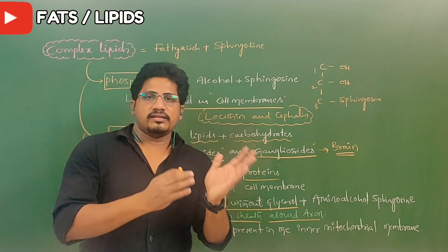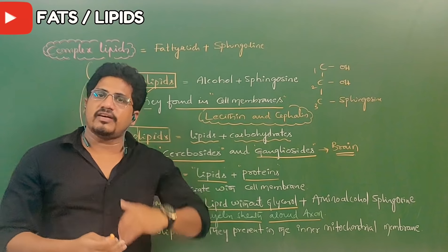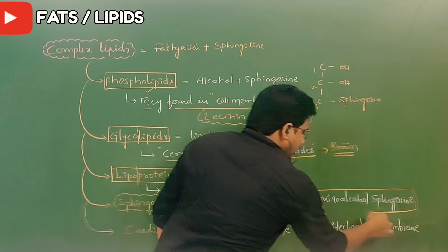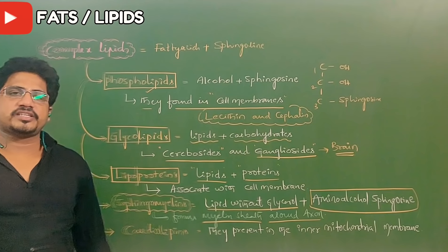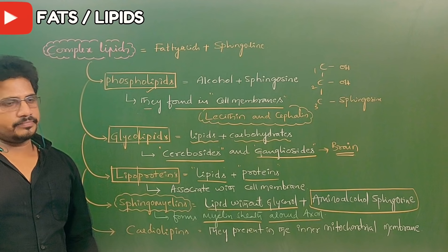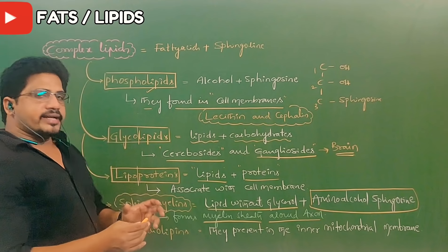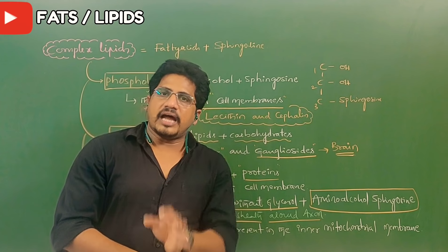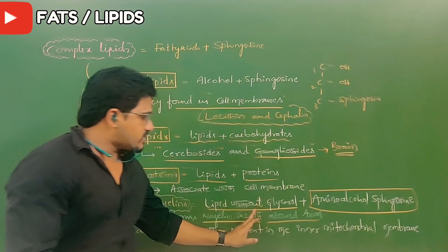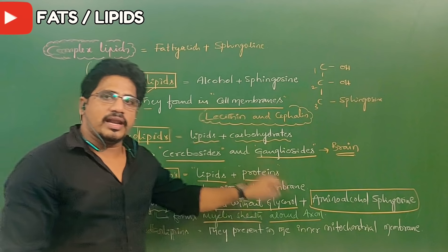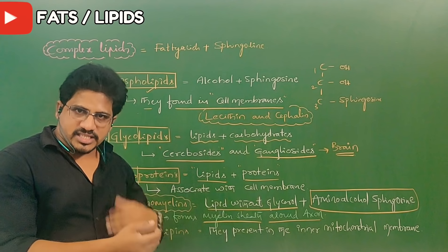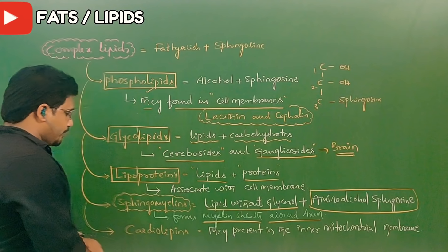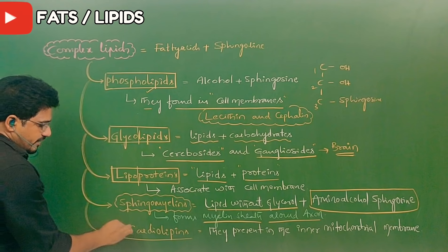How are sphingomyelins composed? In a general lipid, glycerol plus fatty acids are present. But in sphingomyelins, glycerol is absent. Instead of glycerol, amino alcohol sphingosine is present. Sphingomyelins exist around the neurons forming the myelin sheath. Inside the lipid, glycerol is absent — it is a glycerol-less lipid — and in place of glycerol, the amino alcohol sphingosine exists.